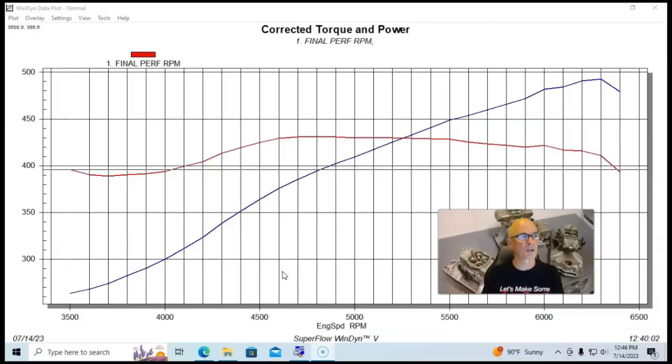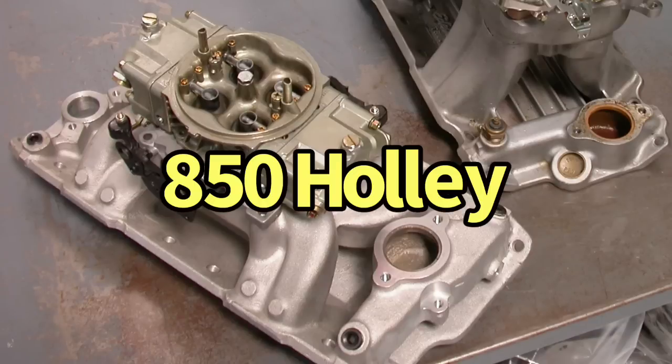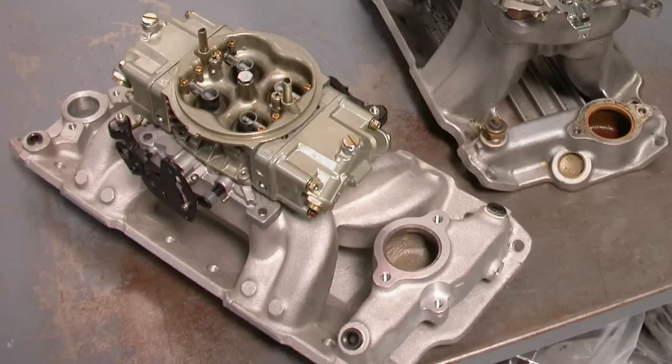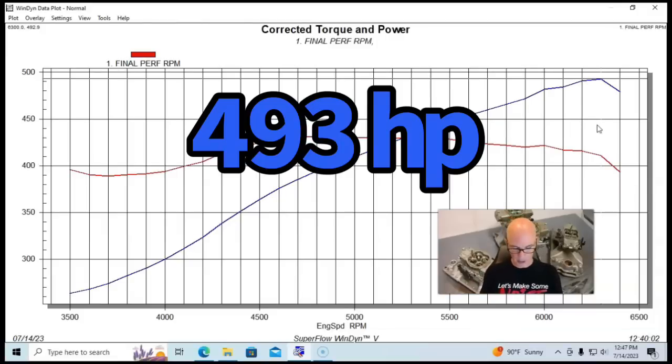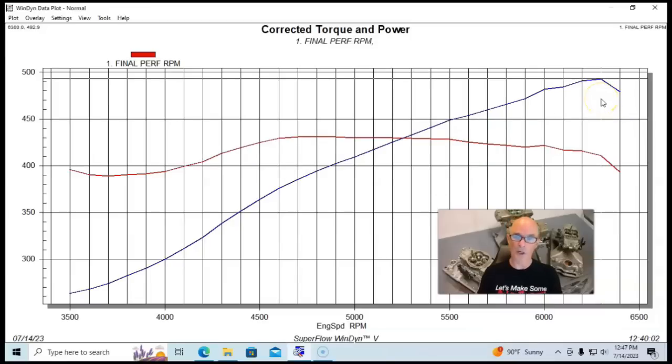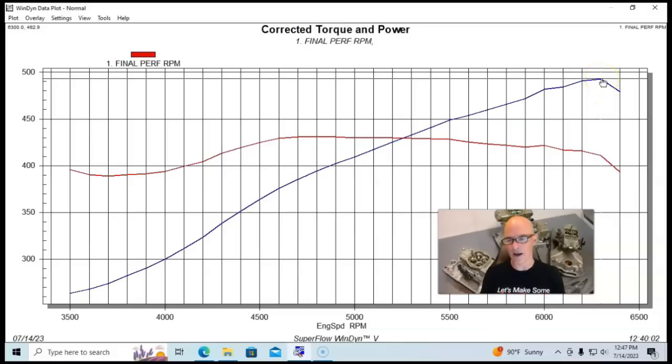Starting off with our dual plane RPM Air Gap, we also ran the single plane and dual plane with an 850 Holley carburetor. Obviously did jetting and timing sweeps to make sure this thing was gonna run. Looking at this power curve, this thing made 493 horsepower with the dual plane and 431 foot-pounds of torque. It looks like we might have been running into a valve spring problem at 6400 RPM.